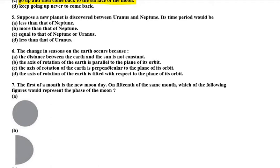So Uranus or Neptune ke beech mein aayega, that means uska jo time period hoga, wo Neptune se kam hoga. Thik hai?